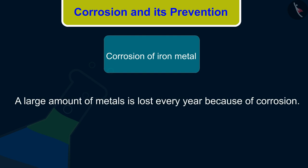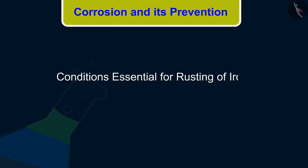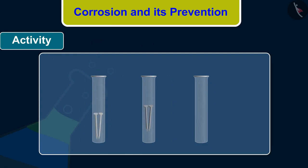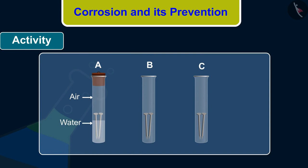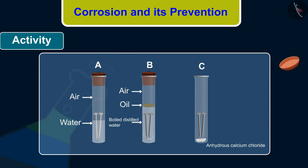Now we will discuss an activity to discover the conditions essential for rusting of iron. Take 3 test tubes and place clean iron nails in each of them. Label these test tubes A, B, and C. Pour some water in test tube A and cork it. Pour boiled distilled water in test tube B, add about 1 ml of oil and cork it — the oil will float on water and prevent air from dissolving in the water. Put some anhydrous calcium chloride in test tube C and cork it.